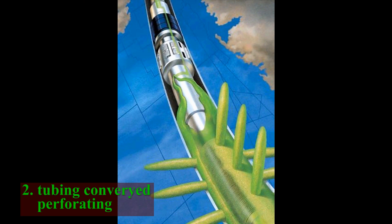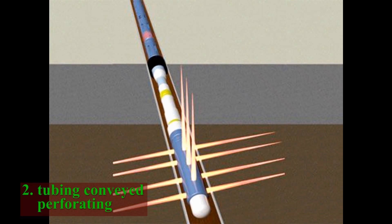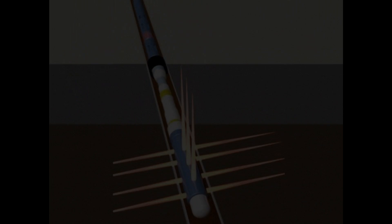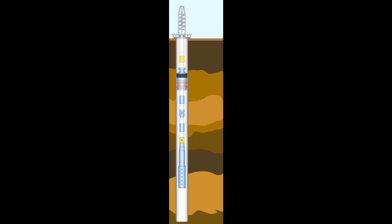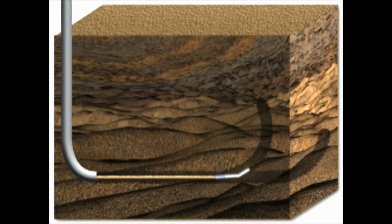Another type, tubing-conveyed perforating, also permits under-balanced perforating in a fully equipped well. Tubing-conveyed perforating guns are run into the hole below a packer on the bottom of the production string. As you can see from the illustration, tubing-conveyed perforating guns are much longer with larger charges. Its advantage is that the tubing-conveyed perforating allows the perforating gun to be pushed into highly deviated or horizontal holes that would be inaccessible to a wireline-conveyed gun.